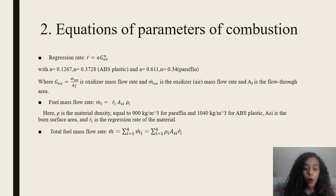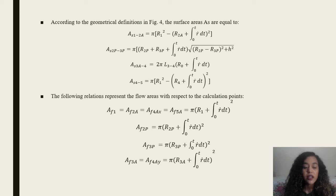The total fuel mass flow rate is given by this equation. According to the geometrical definitions in Figure 4, the surface areas AS are equal to these four equations. And the following relations represent the flow areas at the calculated points, these eight equations.